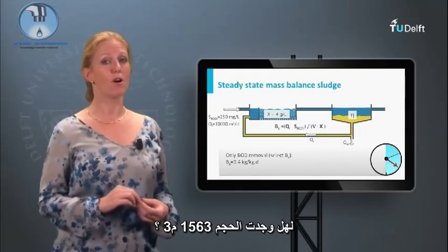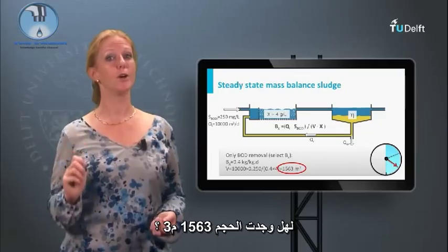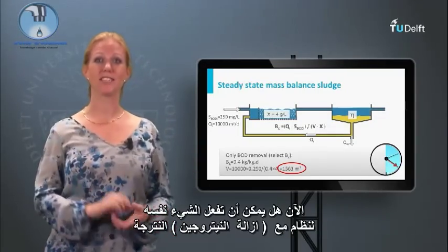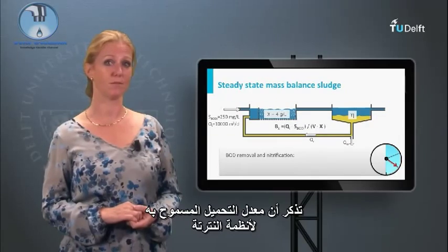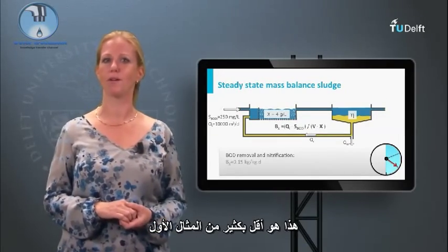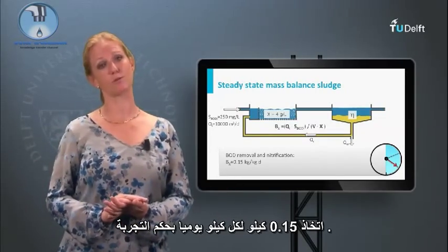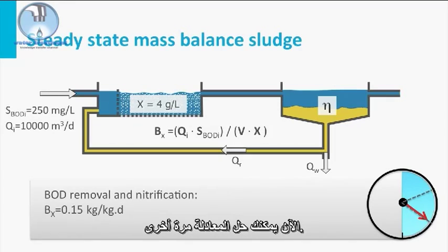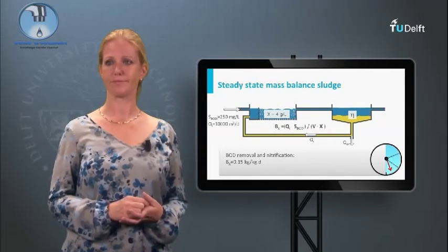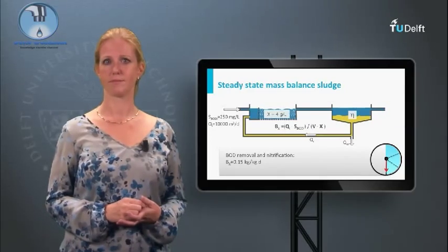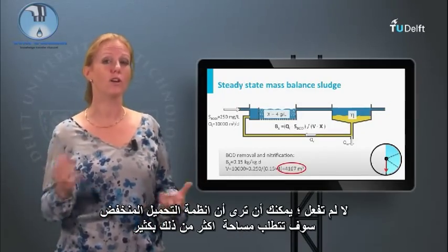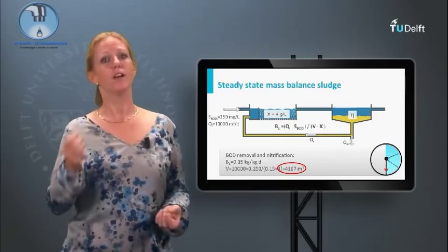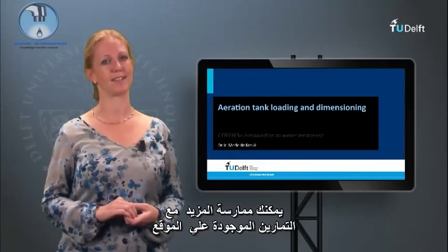Did you find a volume of 1563 cubic meters? Very good! Now you could do the same for a system with nitrification. Remember, the loading rate allowed for nitrifying systems is much lower. Take 0.15 kg per kg per day as a rule of thumb and solve the equation again. Did you find the same answer? No, you did not! You can see that low loaded systems will require much more space. You can practice a little bit more with the exercises given at the website. Have fun!